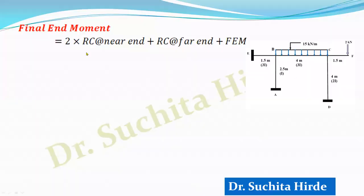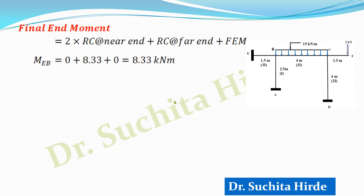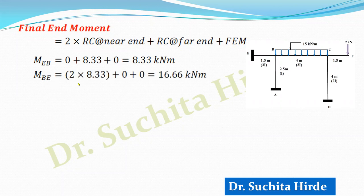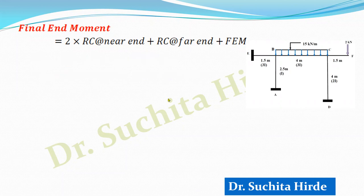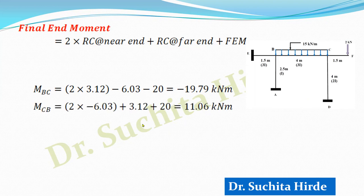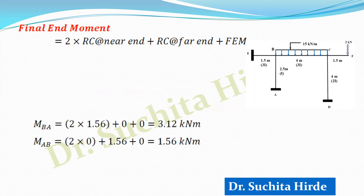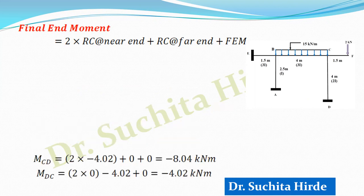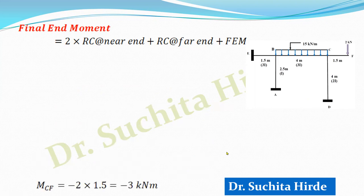These same calculations can also be written in equation form. For each member — EB, BE, BC, CB, BA, AB, and CD — we apply 2 × RC_near + RC_far + FEM to get the final end moments. For member CF, the final moment was already calculated as -3 kNm.